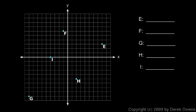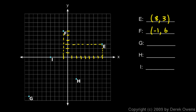Here's example 6. We have five points — E, F, G, H, and I — all marked in the coordinate plane, and we need to write the coordinates for each as ordered pairs. Starting with E: counting from the origin, we go 8 to the right and 3 up, so point E is (8, 3). Point F has an x coordinate of negative 1, and counting up we get 1, 2, 3, 4, 5, 6, so point F is (-1, 6).